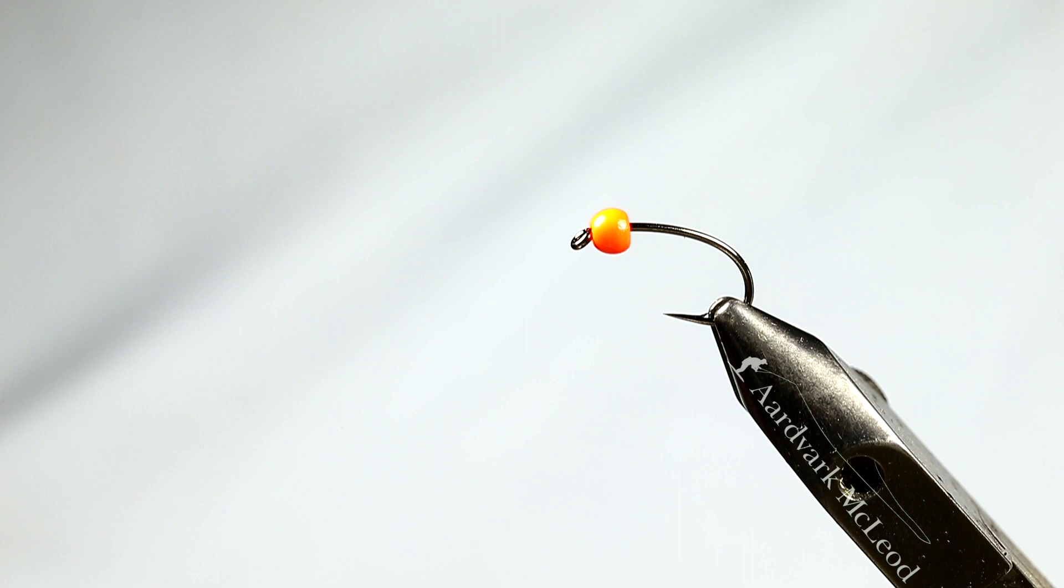One of my very tried and tested patterns down there is a fly called the EMB which is actually named after one of the estancias down there called Estancia Maria Behety, which actually controls the majority of the left bank of the Rio Grande on the Argentine side. So this fly was actually named after Estancia Maria Behety, EMB. This is a slight variation on that theme but very much it is an EMB which is essentially just a black body with white rubber legs.